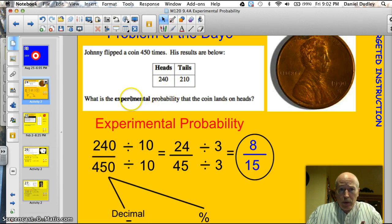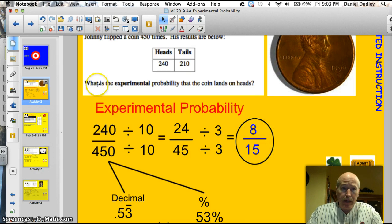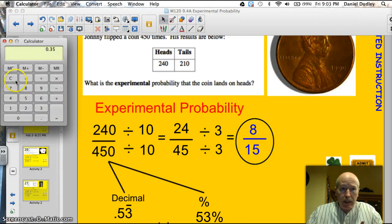All right, so here's what I did. We want to know what the experimental probability that the coin lands on heads is. So it landed on heads 240 times out of 450. I've got to reduce that into a simple fraction in simplest form. So I divided by 10 first and I got 24/45. And then I divided each of those two numbers, 24 and 45, by 3 and I got down to 8/15 in simplest form. But sometimes we like to express that probability in terms of a decimal. So if I take 8 divided by 15, let me grab my calculator real quick, clear this baby out. 8 divided by 15, just like the fraction tells us, I get 0.53 repeating as my decimal.